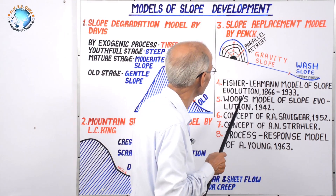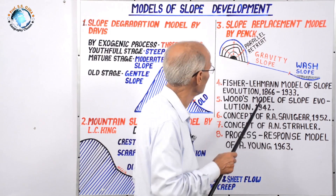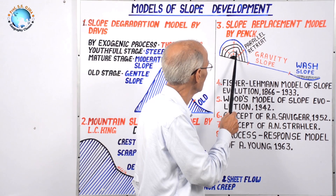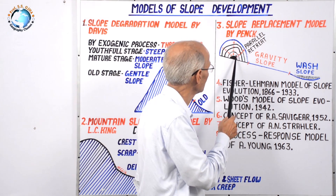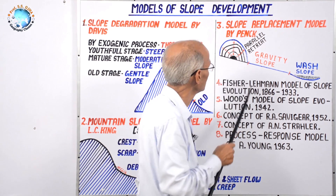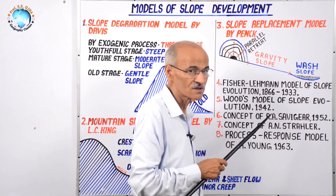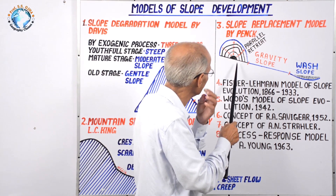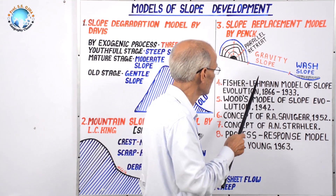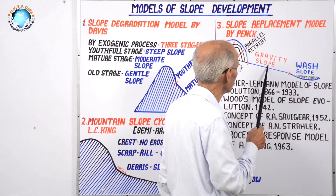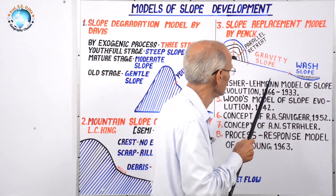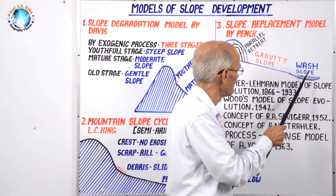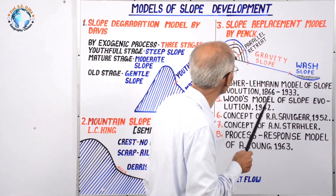These slopes are developed by exogenic or denudation processes. In Penck's model, divided into five stages, the convex slope decreases while the free face slope undergoes parallel retreat. When the highland is reduced to its lowest remnant, it is called an inselberg — equivalent to the monadnock in Davis's cycle. Material is transported over the rectilinear gravity slope and deposited on the wash slope at the base.